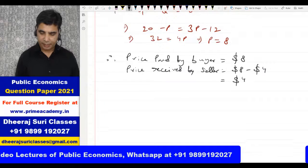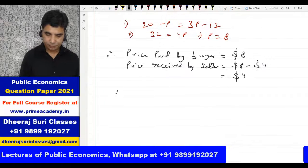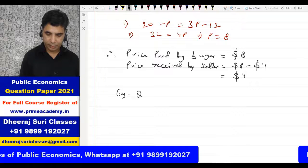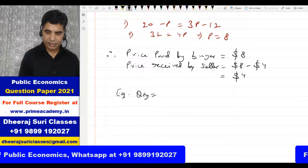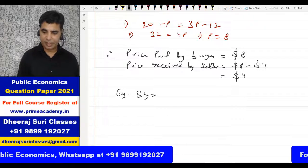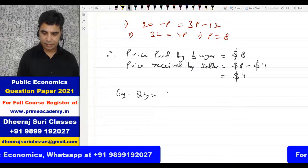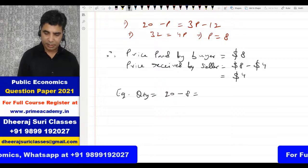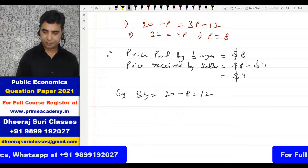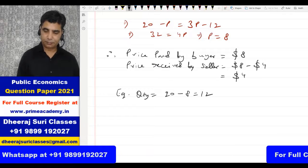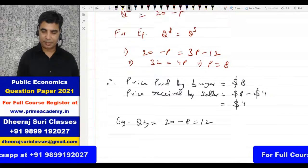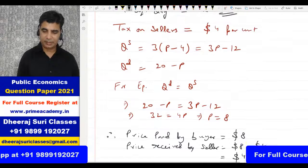Now for the quantity: using the demand function, Q = 20 minus P = 20 minus 8 = 12 units. The new equilibrium quantity after tax is 12 units. You can verify with the supply function: QS = 3 × 4 = 12 units. So we have found equilibrium price, quantity, tax on buyer, and net price to seller.